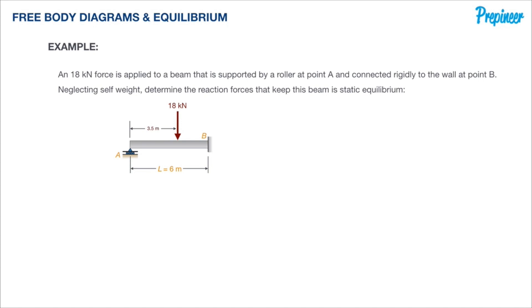This problem says an 18 kilonewton force is applied to a beam that is supported by a roller at point A and connected rigidly to a wall at point B. Neglecting self-weight, determine the reaction forces that keep this beam in static equilibrium.